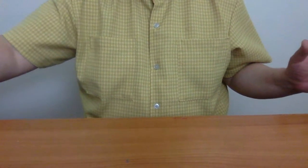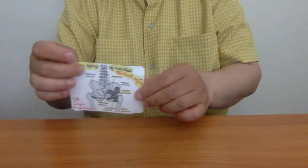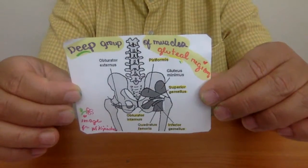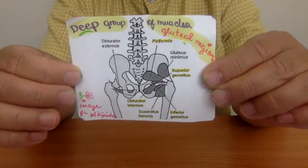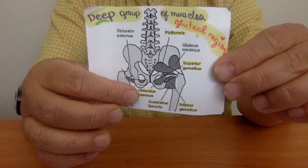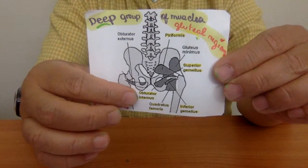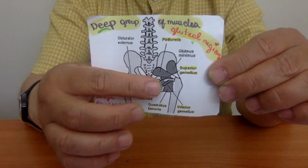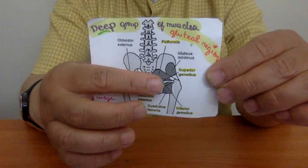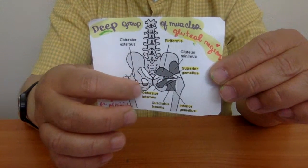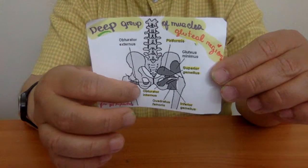Magandang araw. Ang topic natin ngayon ay dito pa rin sa deep group of muscles in the gluteal region. Kaya pag-uusapan na natin ngayon ang obturator internus muscle. Saan yung location niya? Namamagitan siya kay superior gemelus at saka inferior gemelus. Yan si obturator internus.